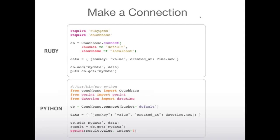Making a connection in each SDK is pretty straightforward. In the Ruby version, we use Couchbase.connect and provide the bucket name and hostname — 'default' and 'localhost' are the defaults. Here I'm creating a hash of a couple of values, adding that to Couchbase, then retrieving it back and outputting it. It's a simple require Couchbase, make a connection, add operation, then a get operation.